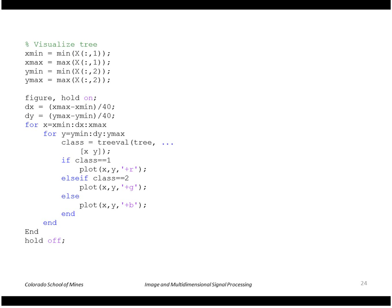This bit of code does that. We find the maximum and minimum along each of the dimensions. We're going to divide each dimension up into 40 increments, and then for each of the points within that 40 by 40 space we call this function treeval.